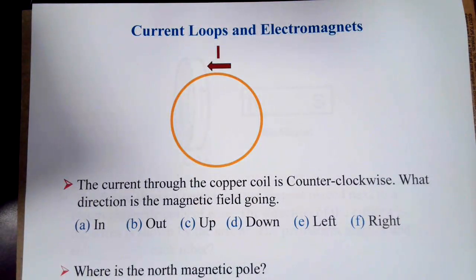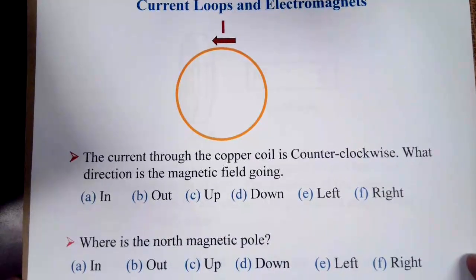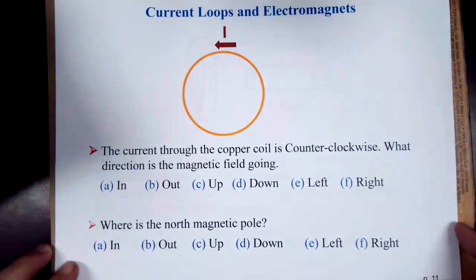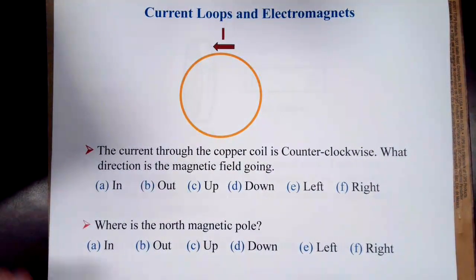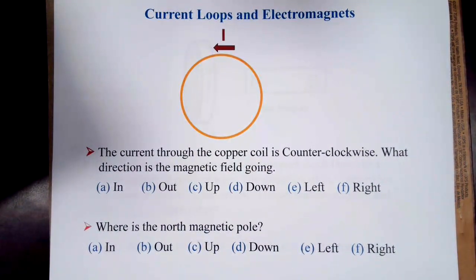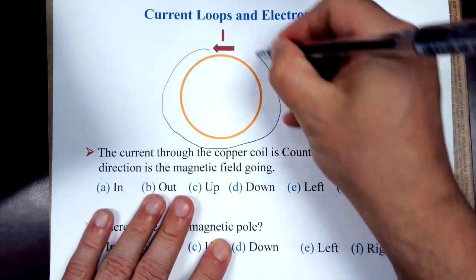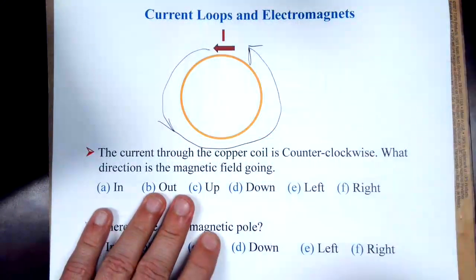The next thing we want to look at is the direction of the current in the loop, and what the direction of the electromagnet then is. We have basically a coil here, and we are saying that our electric current is going around this way, so it is going counterclockwise.